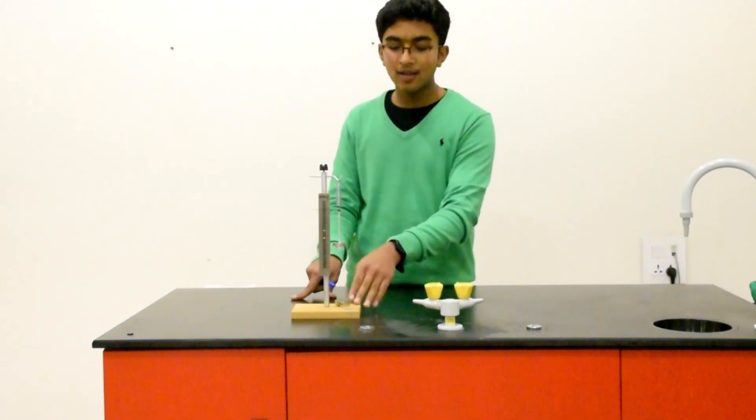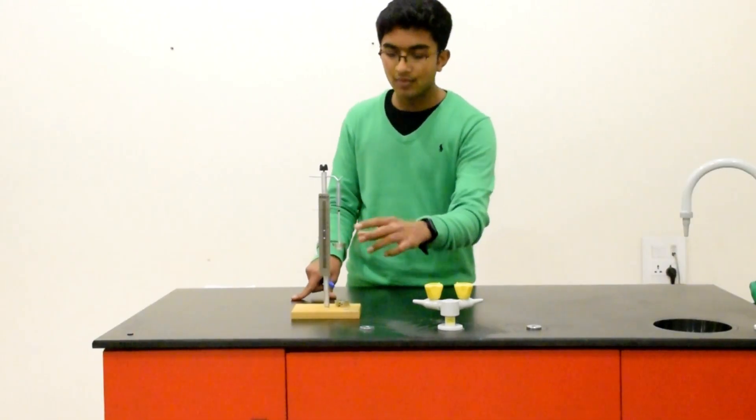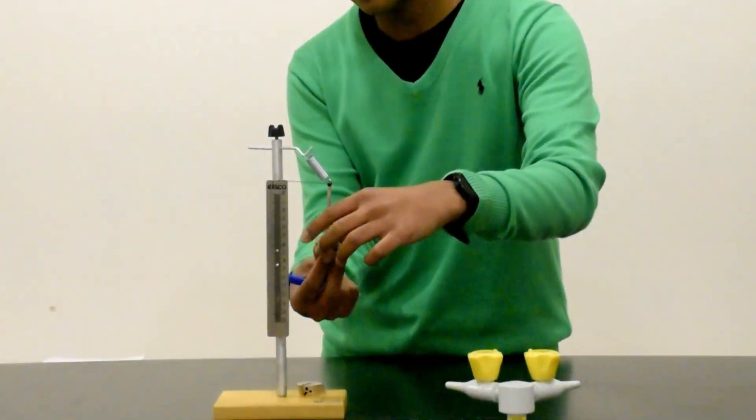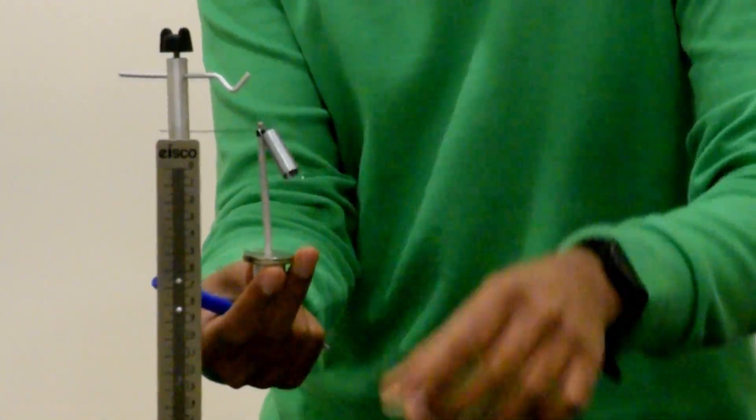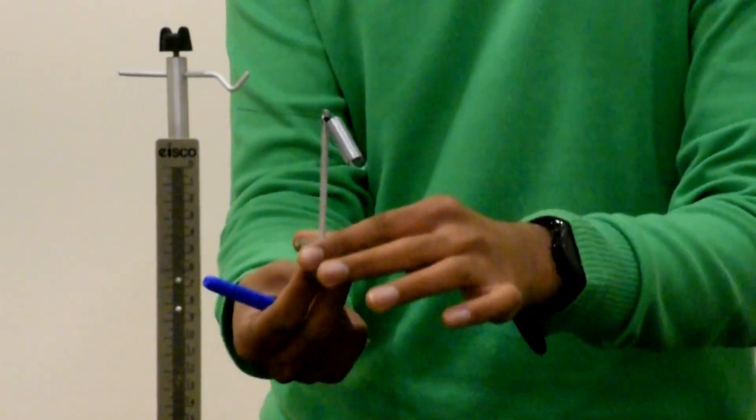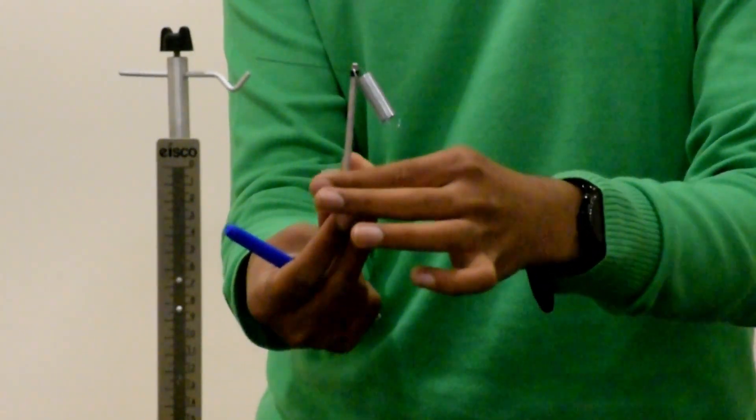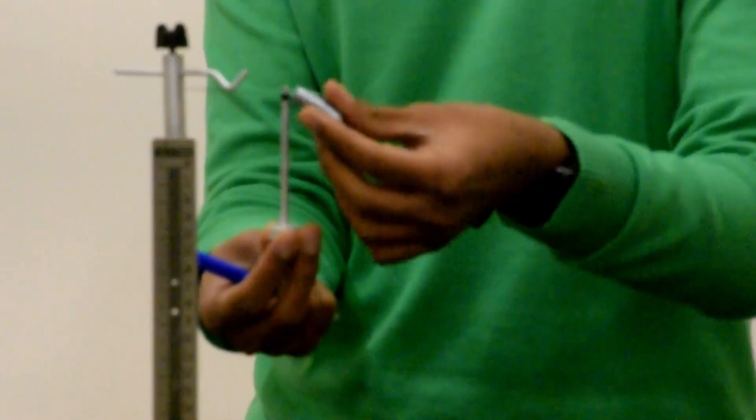So there's a stand, a clamp stand, this is a spring. Now I already have 0.3N of weight to it. So we can probably remove that. So now each disc is 0.1N, applies 0.1N of force downwards.